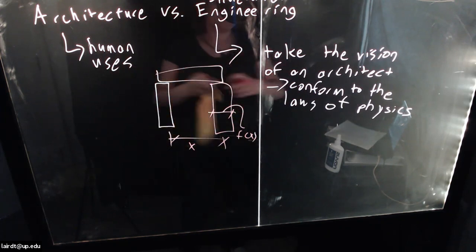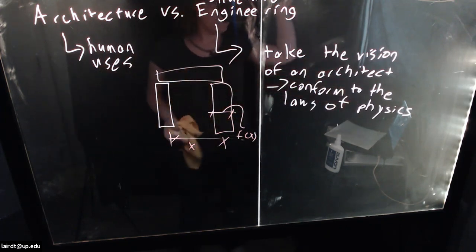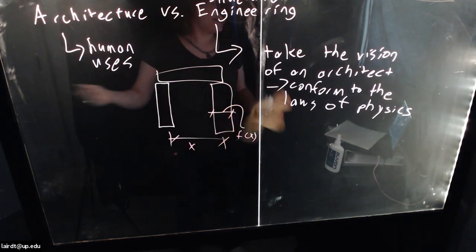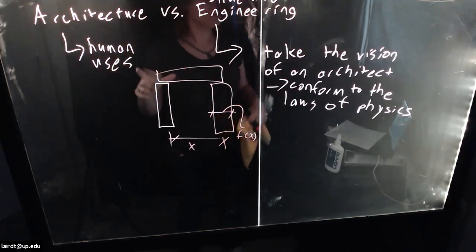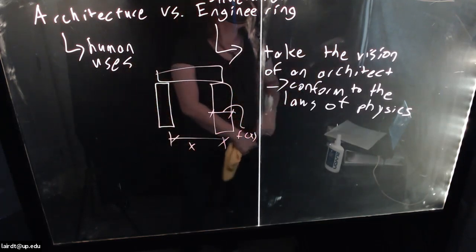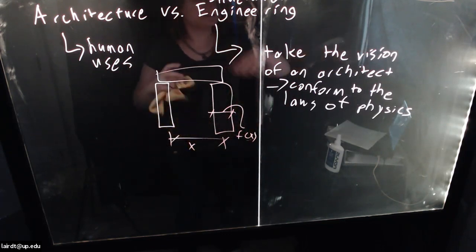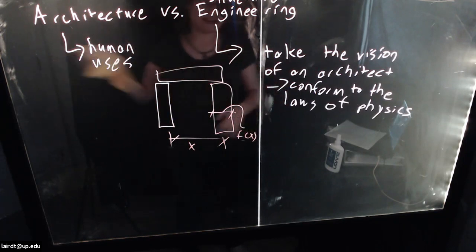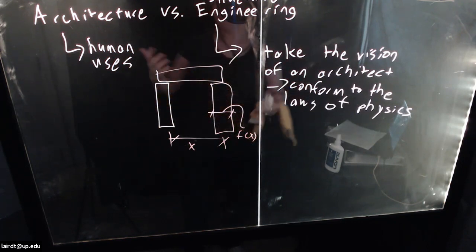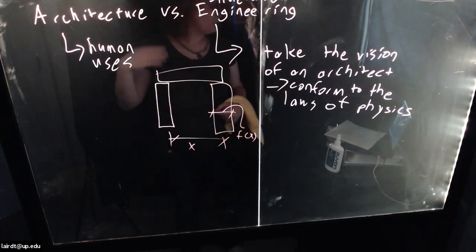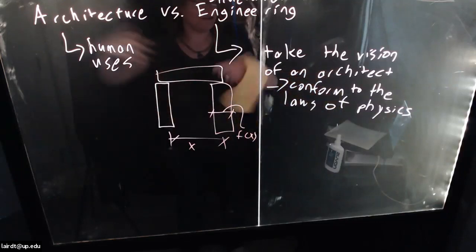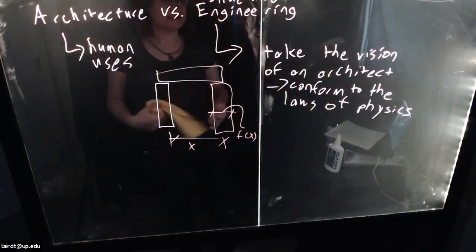People would build a building, remember how thick the walls were, how tall and far apart the columns were. If it fell over, they realized it wasn't good enough, so they'd make the walls a little thicker or the columns a little closer. If it did stand up, maybe they could get away with something slightly less robust in the next iteration. Traditionally, buildings were constructed via hard-won rules of thumb passed down in the trades generation to generation, developed from building things and seeing what fell over and what didn't.